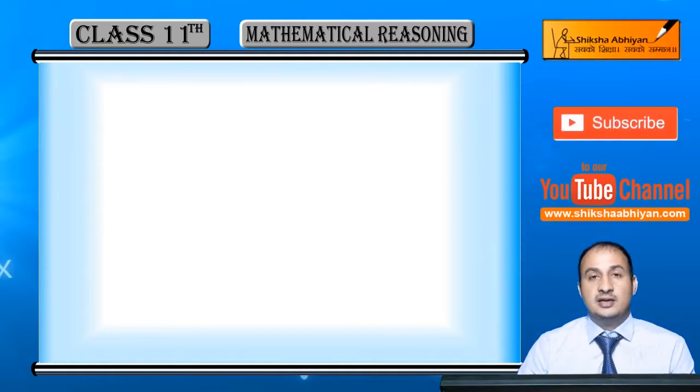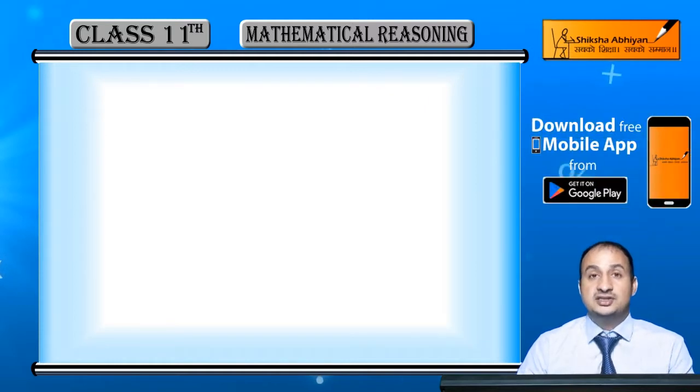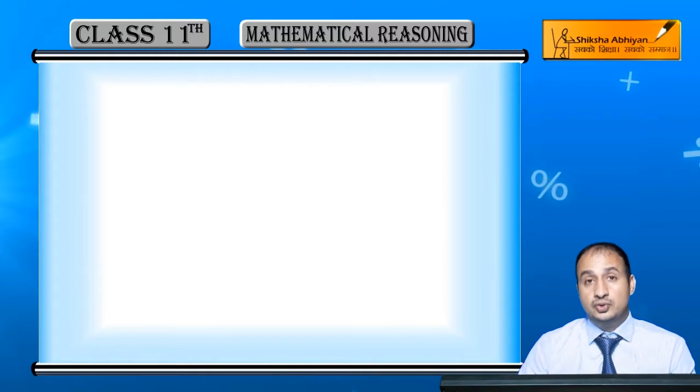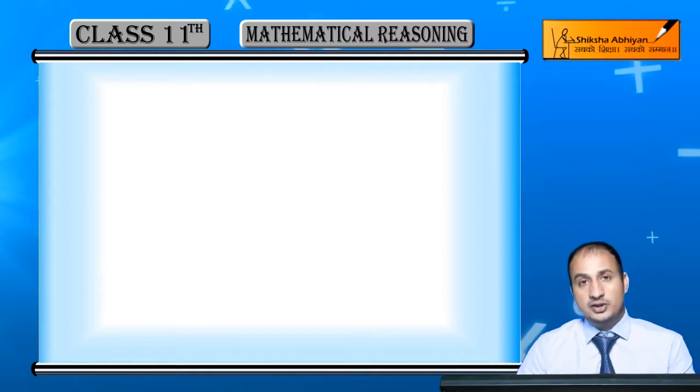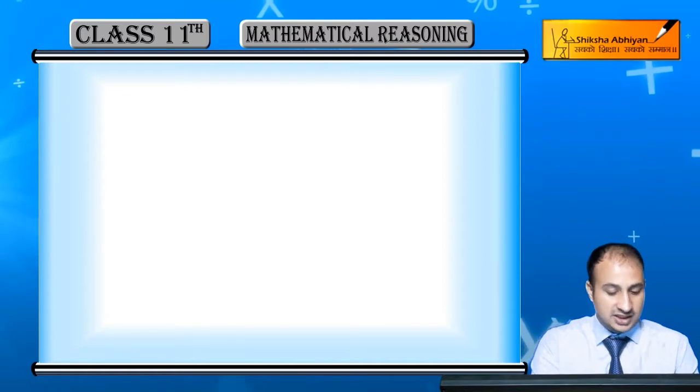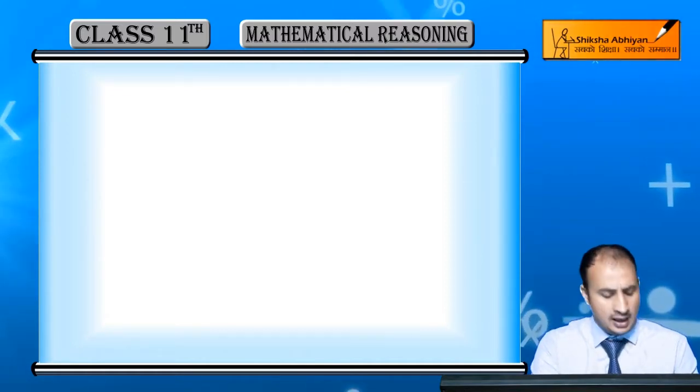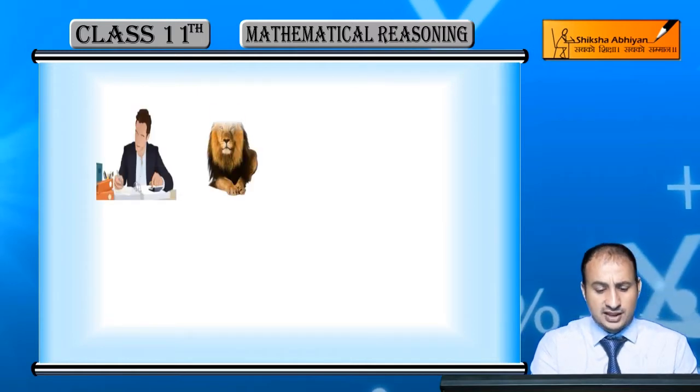And mathematical reasoning ke andar bhi hamare paas kuch preconceived rules hain, jin ke according hum dekhenge ke koi cheez true hai to kyun true hai, koi cheez false hai to kyun false hai. Kya reason hai us cheez ka? Woh reasoning mein hum dekhenge. Ab iske liye jaise maine aap ko bataya ke yahan par mind ke application karte hain. And again, ab main ek simple example le loon.